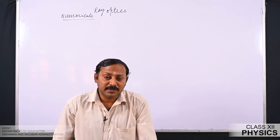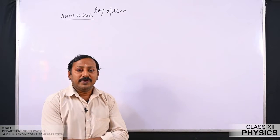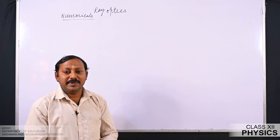Now let us see the second numerical. A double convex lens of glass of refractive index 1.6 has both surfaces of equal radii of curvature of 30 centimeter each. An object of height 5 centimeter is placed at a distance of 12.5 centimeter from the lens. Calculate the size of the image formed.